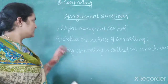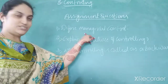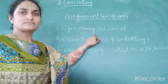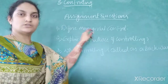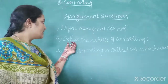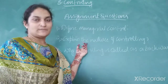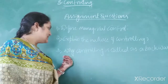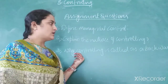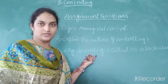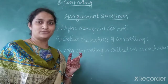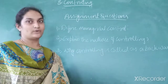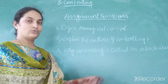So students, these are the assignment questions. First: define managerial control — you have to give the meaning or definition. Next: explain the nature of controlling — you have to explain the features or characteristics, which I have just explained. Last: why is controlling called backward looking? That is a slightly confusing question. You have to answer: why is controlling considered as backward looking? Thank you.